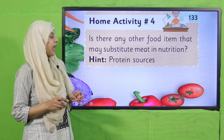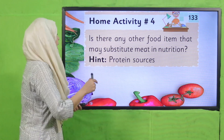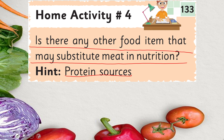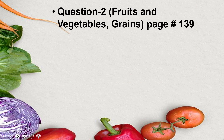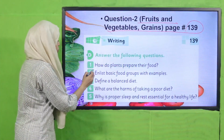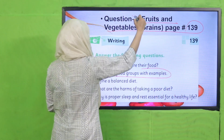Now it's time to note down the homework. Home activity number 4 is given on page number 133: Is there any other food item that may substitute meat in nutrition? Meat provides protein, so which food can provide protein as an alternative? Red beans and green beans are very rich in protein and can be an alternative to meat. Also, question number 2 on page 139: enlist basic food groups with examples — today we will write fruits, vegetables and grains with examples in your notebooks.